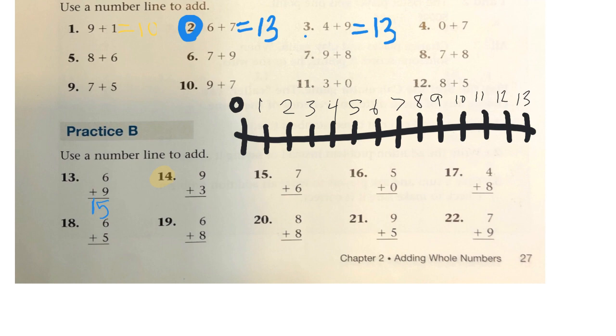Or you can start it at any number you want and then count up to the right. For number 14, we will start at 9. There it is. And we'll count 3 spaces to the right. 1, 2, 3. So 9 plus 3 is 12.